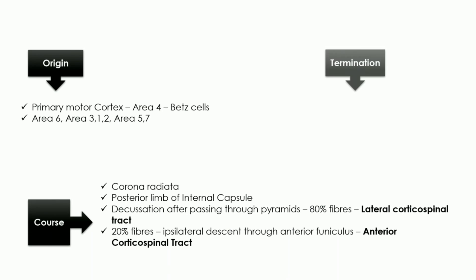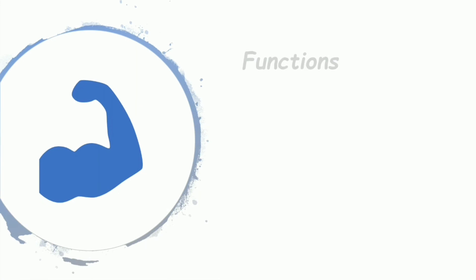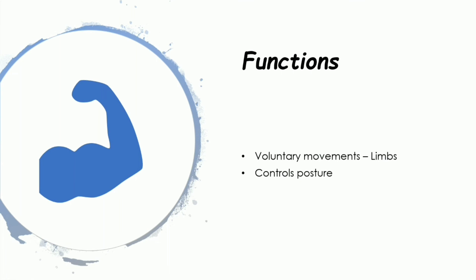As for functions: the lateral corticospinal tract controls the voluntary movements of the limbs, as our limbs are under voluntary control. The anterior corticospinal tract regulates postural muscles, though this is less significant since posture is mainly regulated by the vestibular system. This covers the origin, course, termination, and functions of the corticospinal tract — the most important tract regulating skilled voluntary actions.